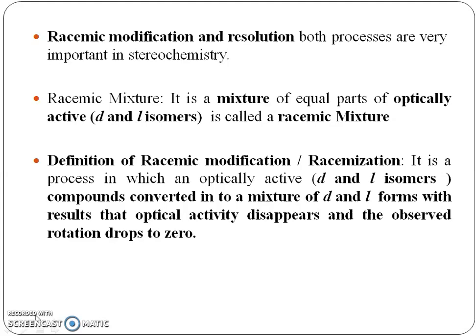Racemic modification and resolution — both processes are very important in stereochemistry. Another definition: racemic modification, also called racemization, is a process in which optically active D and L isomers or compounds are converted into a mixture of D and L forms, with the result that optical activity disappears and the observed rotation drops to zero.